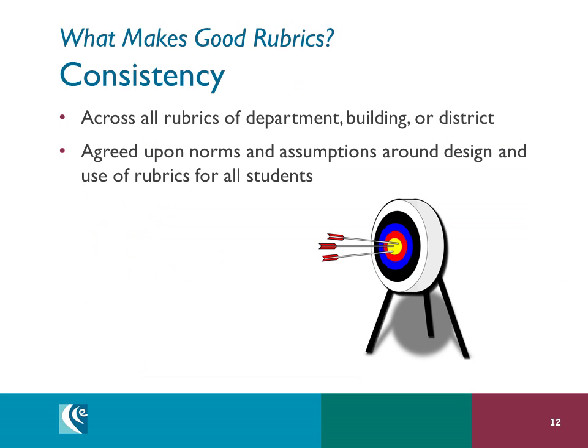Finally, for a system of rubrics in the building or district, is there consistency of structure and practice? This isn't a quality of one rubric, but is shared across all rubrics of the department, building, or district. In order to ensure equity among students, it's vital that all students use similar rubric structures and share the same assumptions and procedures. This doesn't mean all rubrics have to be identical, but there should be agreed-upon norms around the design and use of rubrics for all students. Many choices around rubrics are up to teachers or leaders — some districts, for example, place proficiency at four rather than three. This is fine as long as there is consistency for all students.